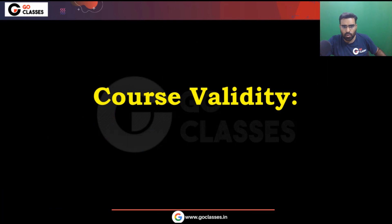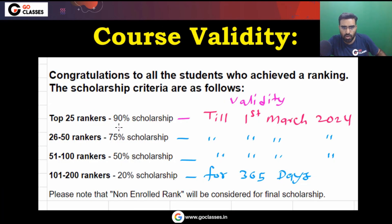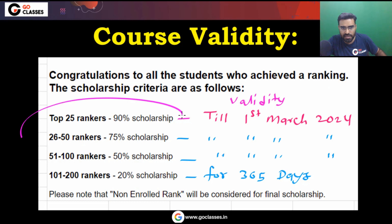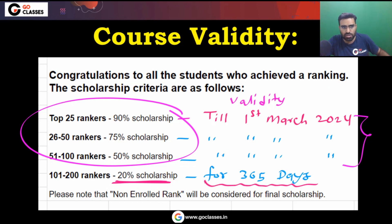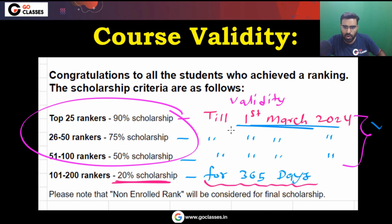What is the course validity? If you are a top 25 ranker getting 90% scholarship, the course validity will be till 1st March 2024 — meaning after GATE 2024 is over, your course will expire. The same validity of 1st March 2024 applies if you are getting 90%, 75%, or 50% scholarship. If you are getting a 20% scholarship, then your course validity will be for 365 days. The reason for the March 2024 cutoff is to prevent misuse of the course after the GATE exam.